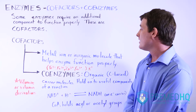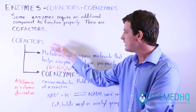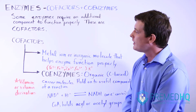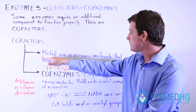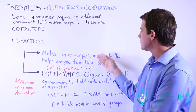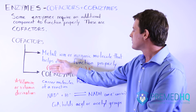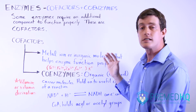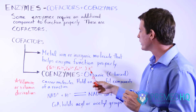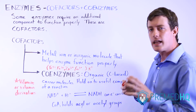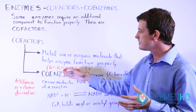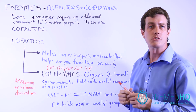To summarize: cofactors contain the category of coenzymes, but cofactors also include metal ions or inorganic molecules that help the enzyme function. Coenzymes are organic and carry certain things that are useful for the enzyme-catalyzed reaction.